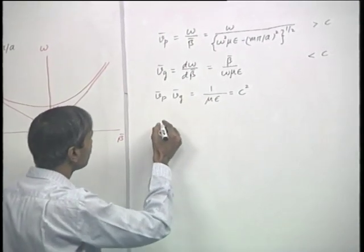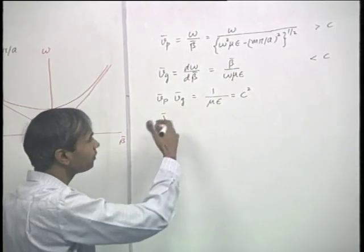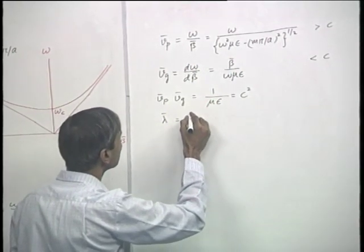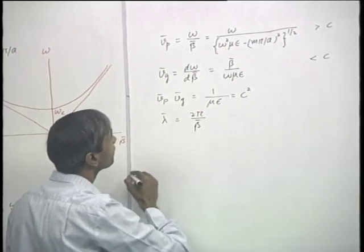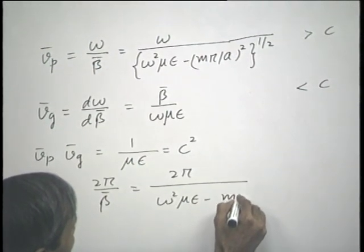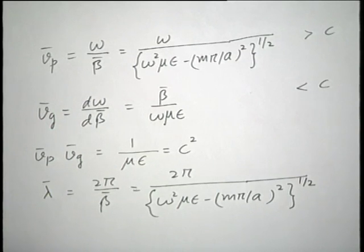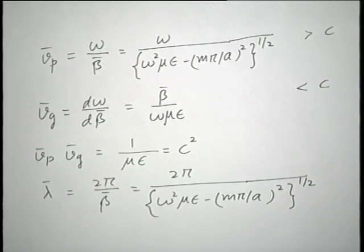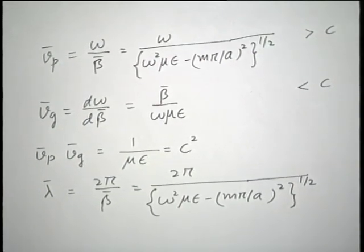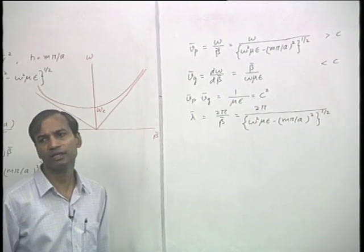The guide wavelength, lambda-bar (or lambda-g in many books), equals 2-pi over beta-bar, which is 2-pi divided by the square root of omega squared mu epsilon minus (m-pi over A) squared. We have already considered the field configurations corresponding to TE and TM modes. These waves have properties different from a uniform plane wave that would be supported in an infinite medium having the same mu and epsilon as the medium in the parallel plane waveguide.